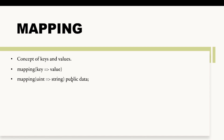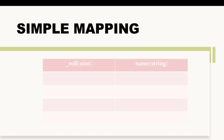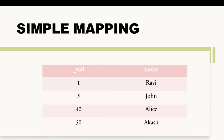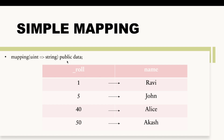This is public, which is optional, and then we have this variable. This is how it will look in memory — we will have a mapping storing uint type roll numbers and string type names. We will store information like: roll number 1 mapped to Ravi, 5 mapped to John, 40 mapped to Alice, and so on.